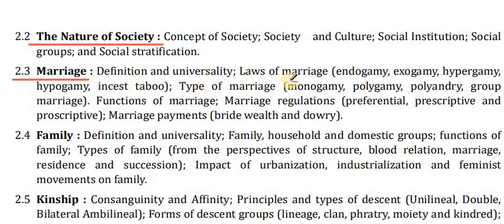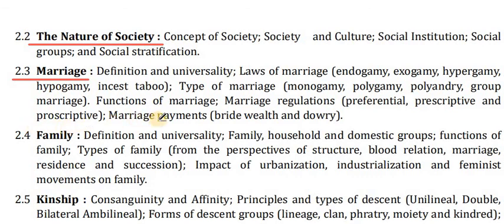Point 2.3 covers marriage: definition and universality, laws of marriage — endogamy, exogamy, hypergamy, hypogamy — incest taboo, types of marriage: monogamy, polygyny, polyandry, group marriage. Functions of marriage, marriage regulations — preferential, prescriptive and proscriptive — bride price, bride wealth and dowry.